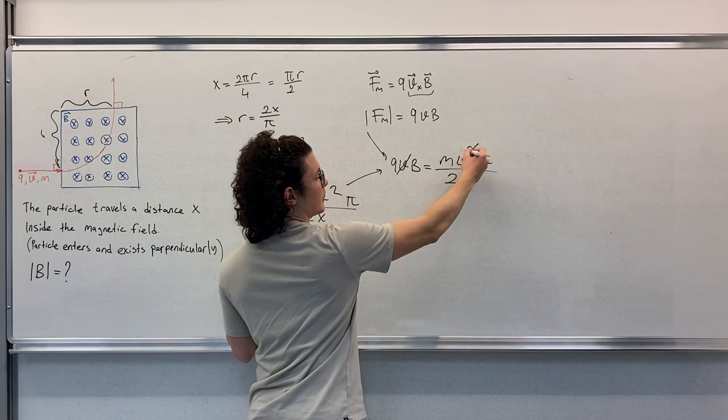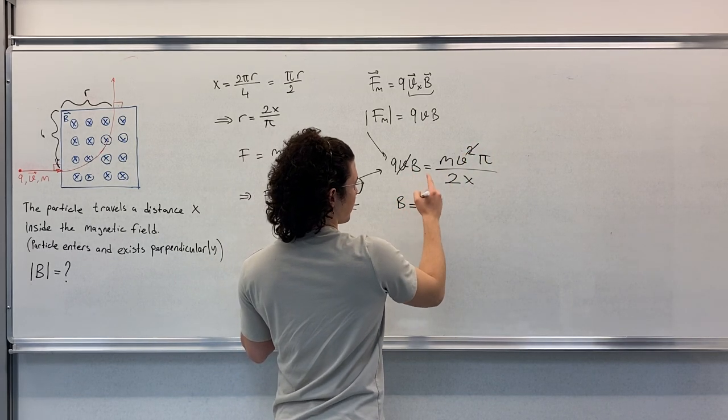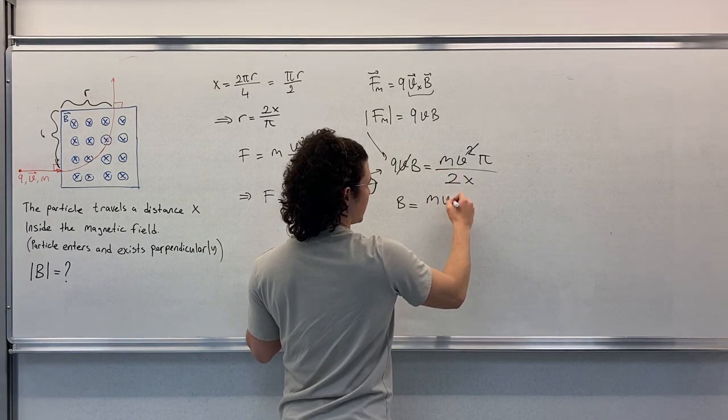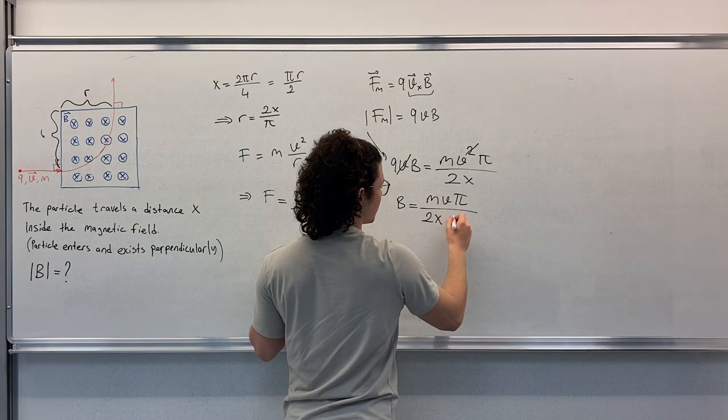These v's are gone, so we obtain B as mvπ over 2xq.